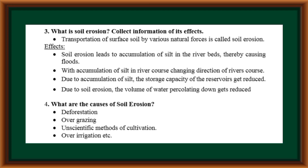What is soil erosion? Collect information about its effects. Transformation and transportation of surface soil by various natural forces is called soil erosion. Effects: it leads to accumulation of silt in riverbeds thereby causing floods; accumulation of silt changes the direction of river courses; the storage capacity of reservoirs gets reduced; and the volume of water percolating down gets reduced.